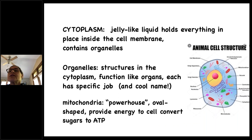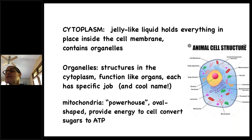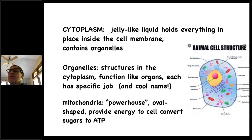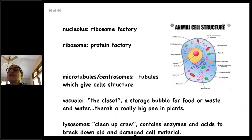The cytoplasm is a jelly-like liquid that holds everything in place inside the cell membrane, and it contains organelles. In this diagram the cell membrane is dark blue and the light blue is all the cytoplasm. Floating in the cytoplasm are organelles — structures that function like organs, each with a specific job and a cool name. The first is mitochondria — the oval-shaped red things — which provide energy to the cell and convert sugars to ATP. The nucleolus is a ribosome factory, and it's part of the nucleus.